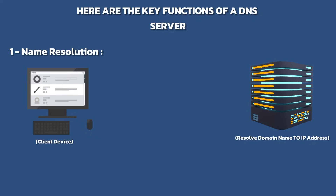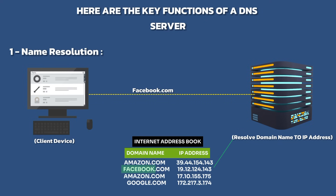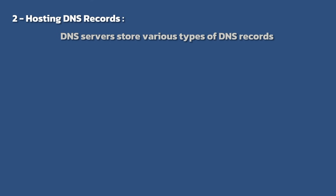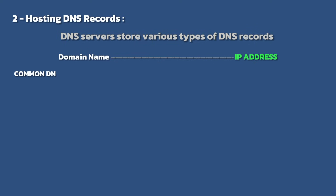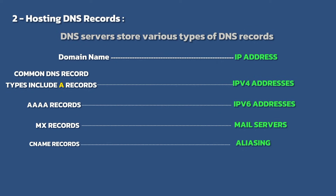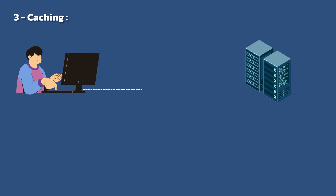The primary function of a DNS server is name resolution: when a client device sends a DNS query for a specific domain name, the DNS server searches its database for the corresponding IP address and returns it to the client. DNS servers also host various types of DNS records that map domain names to IP addresses or provide other information about domains. Common DNS record types include A records for IPv4 addresses, AAAA records for IPv6 addresses, MX records for mail servers, CNAME records for aliasing, and TXT records for text-based information.